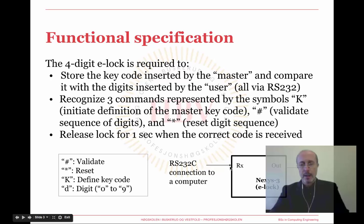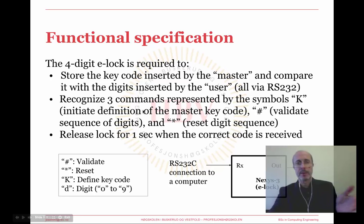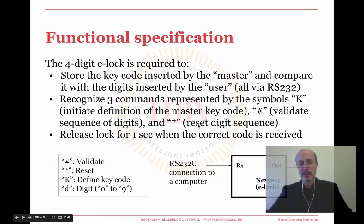We are assuming the existence of three control characters as indicated in the second point of this slide. One is for initiating the transmission of the master key, and that will be the uppercase K letter. A second one, which is the sharp key, is used to validate the sequence of digits that have just been inserted. And finally, in case you make a mistake, there is the asterisk, which represents the reset control character and enables you to restart typing from the beginning.